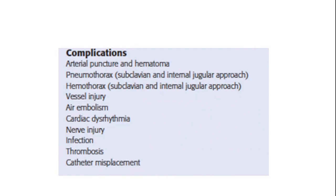Ví dụ: khi đặt catheter tĩnh mạch trung tâm — tĩnh mạch cảnh trong — nếu đi vào động mạch cảnh, nó gây ra huyết khối và có thể tạo ra một khối máu tụ rất lớn, chèn ép đường thở. Ngoài ra, còn có nguy cơ chạm vào thần kinh đi theo đường đó, gây tổn thương thần kinh.